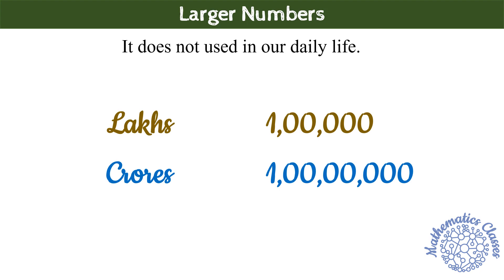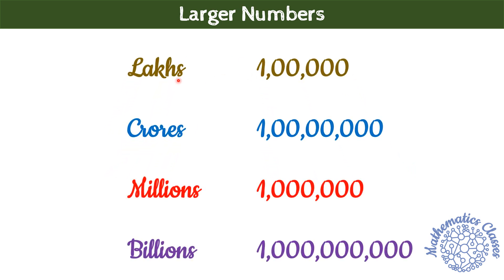हमने earlier classes में numbers के बारे में already बहुत कुछ पढ़ा है। आज हम larger numbers के बारे में बात करेंगे, जैसे कि Lakhs and Crores। Large numbers वो numbers होते हैं जो हमारे daily life में use होने वाले numbers से काफी बड़े होते हैं। Numbers system में जो numbers Lakhs, Crores, Millions या Billions में होते हैं, वो सब large numbers होते हैं।